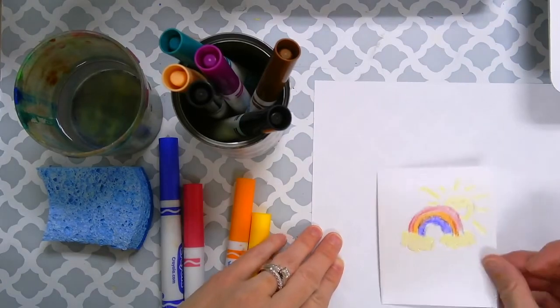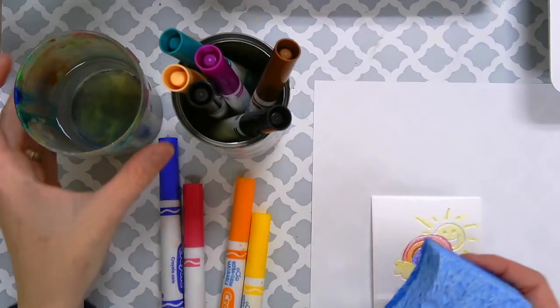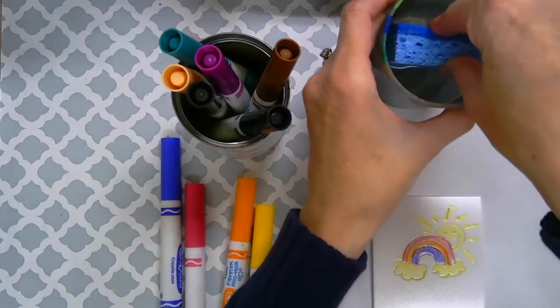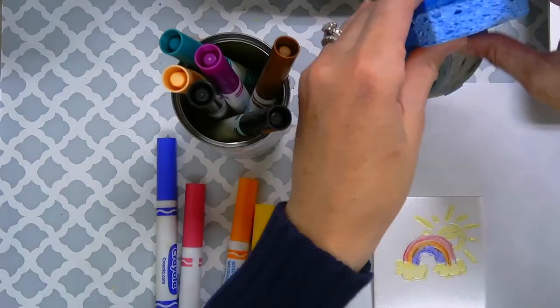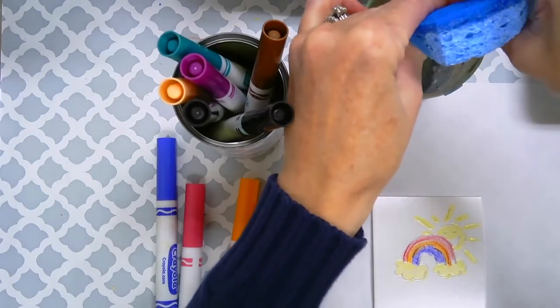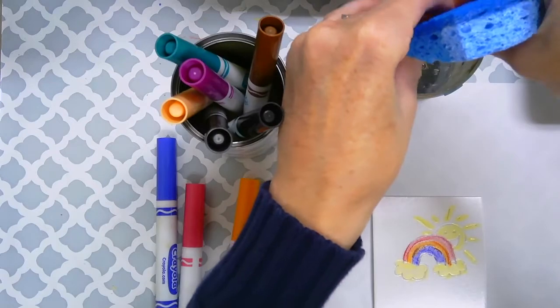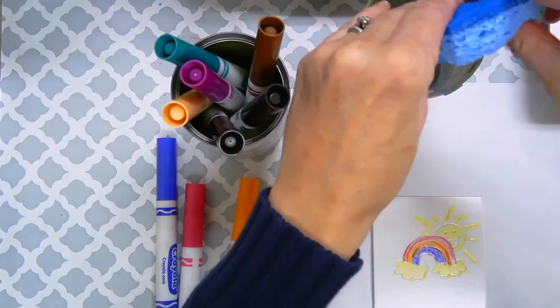Now this is where we need our sponge. So with our sponge we're going to put it in the water and then you want to squeeze all that water out. So basically you just want your sponge to be nice and damp.